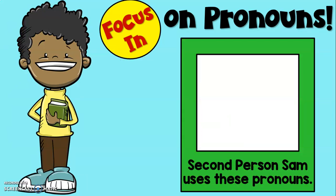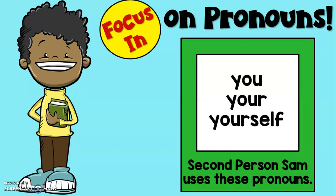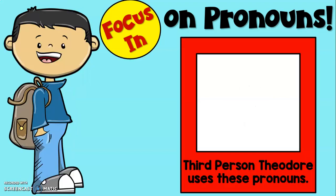Now, second person Sam will have different pronouns. In this point of view, the narrator is speaking directly to the reader. This is not used as much as other points of view. Some of the pronouns you would see for second person are: you, your, yourself. Because in this point of view, the narrator is speaking directly to you, the reader.